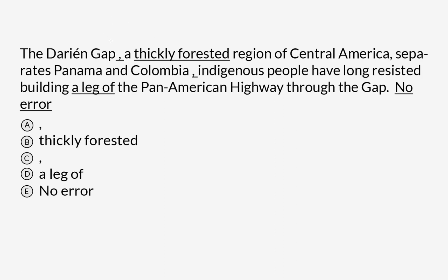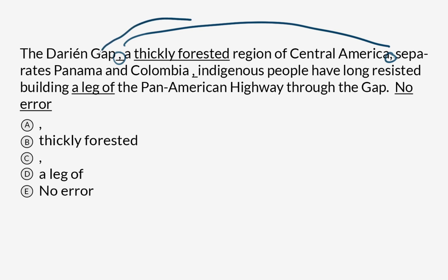So option A: the Darien Gap. We have this comma here — that's what's underlined — but we also have another comma here. This is what we call a comma-bounded descriptive aside; you can call it an appositive. What it's doing is blocking off this chunk, this description — 'a thickly forested region of Central America' — to refer back to the Darien Gap. So this is being used correctly, and I'm going to cross it off. The next underlined portion is 'thickly forested.' This tests our knowledge of adjectives and adverbs. 'Thickly' is an adverb describing 'forested,' which is an adjective describing 'region.' This tracks correctly, so I'm crossing it off.